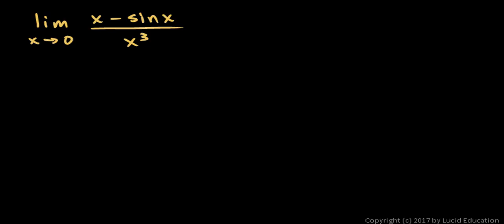Here we have the limit as x approaches 0 of x minus sin x over x cubed. If we put in a value of 0 for x, we just get 0 minus 0 over 0, which is indeterminate. So let's apply L'Hôpital's rule.